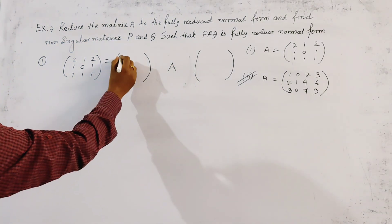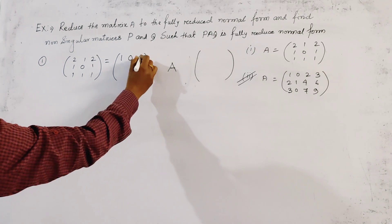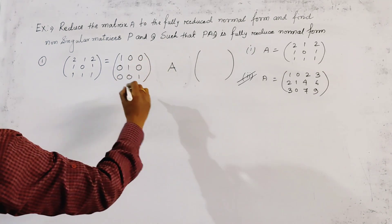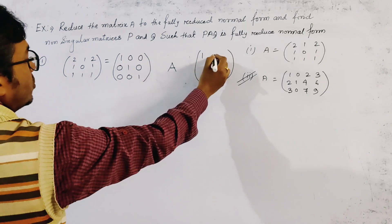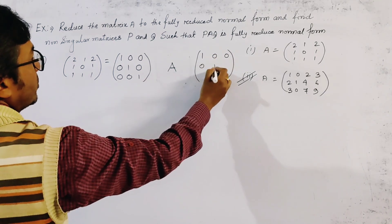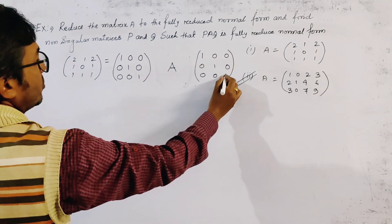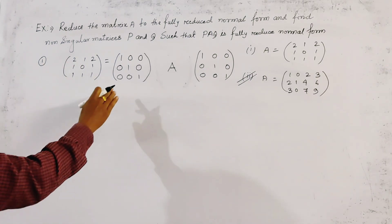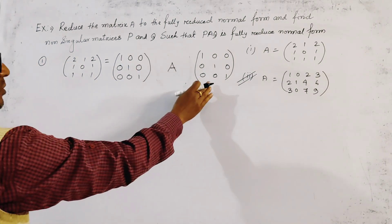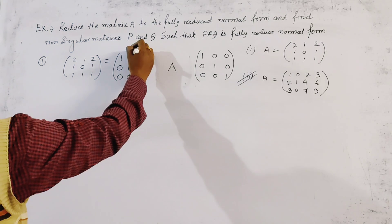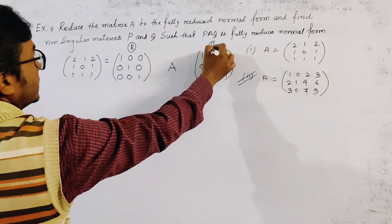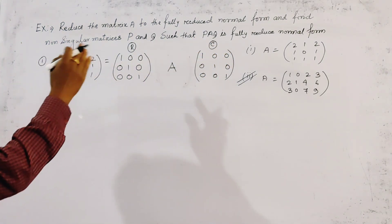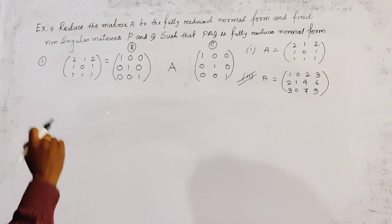We write this as the product of three matrices. On the left we place the 3x3 identity matrix I, then A in the middle, then the 3x3 identity matrix I on the right. We will make all row operations on the left-hand side matrix and all column operations on the right-hand side matrix to reduce A to fully reduced normal form.